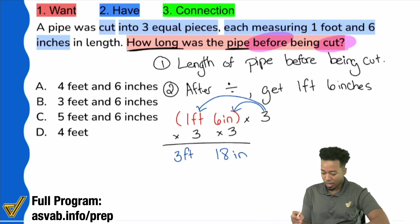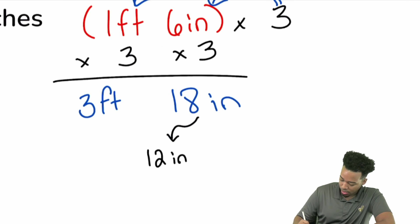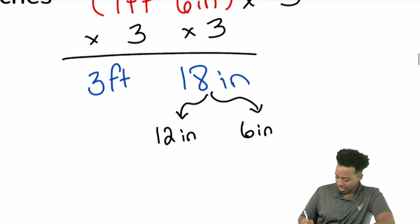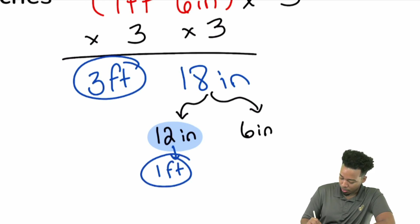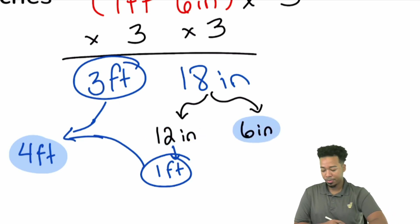So here's how we're going to do that. 18 inches, remember that 18 inches is the same thing as 12 inches and 6 inches. Now why did I choose 12? I chose 12 because again, this is going to be 1 foot. That's a foot. And since you already have 3 feet there and 1 foot there, that's going to be now 4 feet.